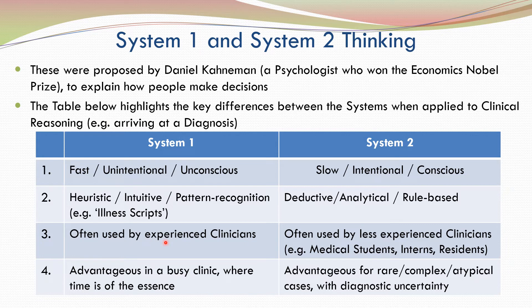For example, an experienced clinician would normally use system 1 in a busy clinic where time is of the essence, and they are able to make quick diagnoses using illness scripts which employ pattern recognition. But the same experienced clinician can seamlessly transition to system 2 type of thinking when he or she encounters a rare, complex or atypical case where there is diagnostic uncertainty.